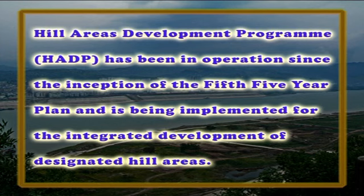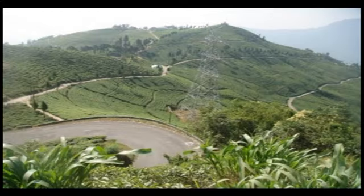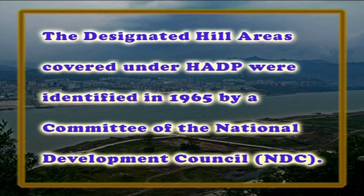Next are hill areas and the North Eastern Council. The Hill Areas Development Program, that is HADP, has been in operation since the inception of the fifth five-year plan and is being implemented for the integrated development of designated hill areas. The main objective of this program is to ensure ecologically sustainable socio-economic development of hill areas keeping in view the basic needs of the people. The designated hill areas covered under HADP were identified in 1965 by a committee of the National Development Council, that is NDC. These included 12 districts of Uttar Pradesh.